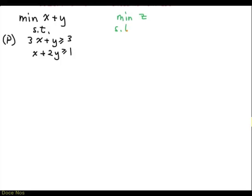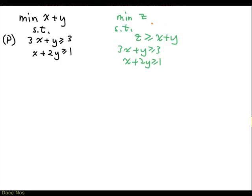The problem we're going to look at is minimizing z, subject to: z greater than or equal to x plus y, 3x plus y greater than or equal to 3, and x plus 2y greater than or equal to 1. These two problems are quite similar. In fact, they have the same constraints, except the green problem has one extra constraint and one extra variable.